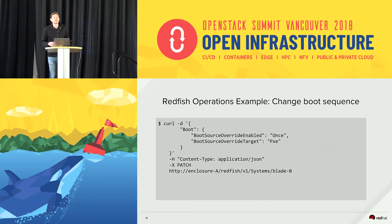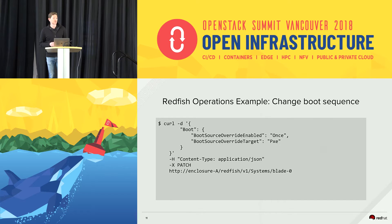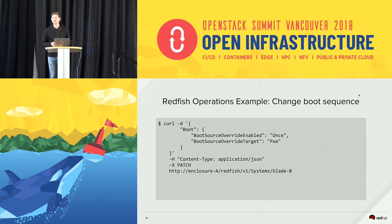Say that you want to do something slightly more sophisticated — an operation instead of just listing a service. For example, change the boot order. Well, you would push this through the API and say, 'I want to PXE boot this node.' You run this, and you are good to go.